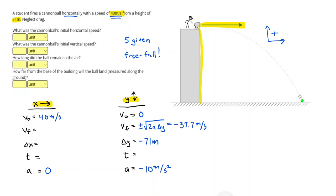And to get my time, I can do V final minus V initial divided by A. And that would just give me 3.77 seconds.